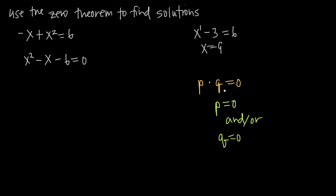We can use the zero theorem to find the solution to this equation by factoring the left hand side. This is a regular trinomial that we've already learned how to factor — we're going to factor it into two binomials multiplied together. When we do that, we get x and x, and then we have factors of six that are three and two, so we can say minus three and plus two.